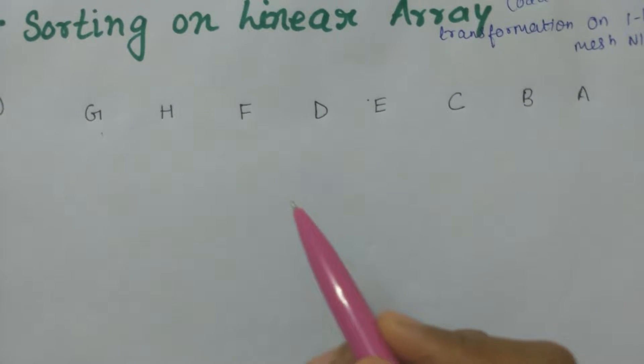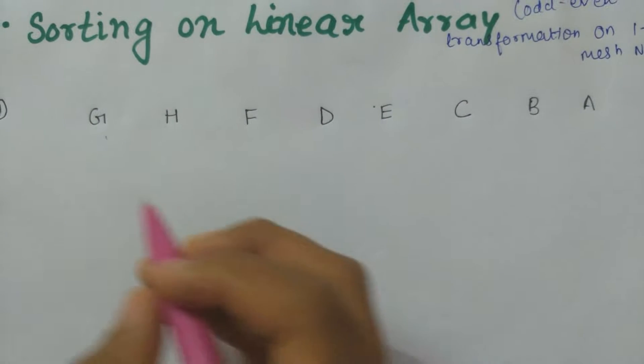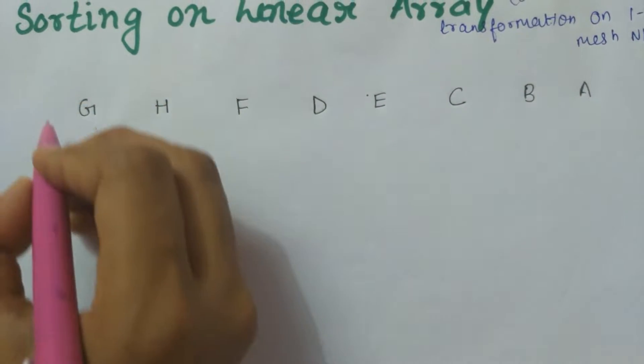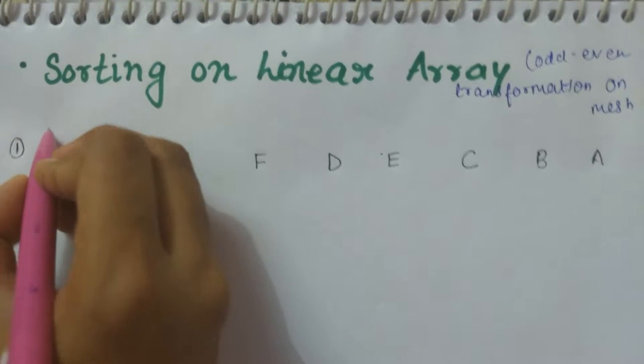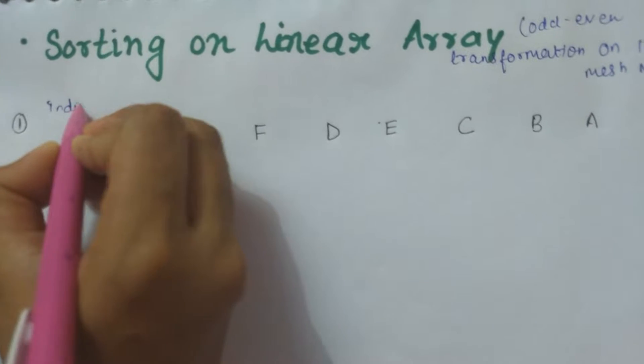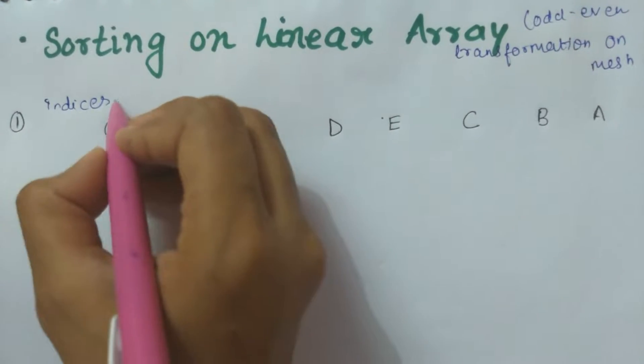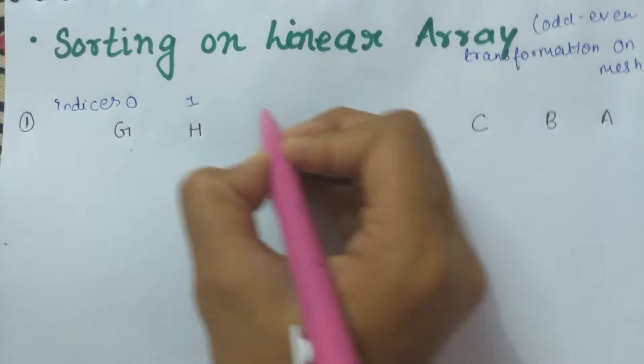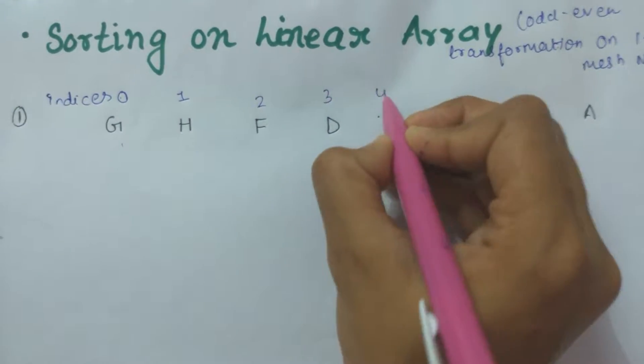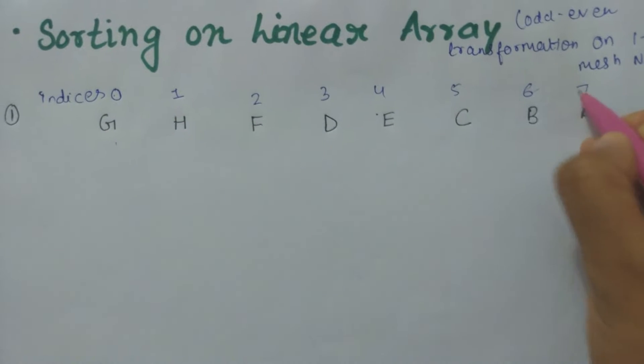So let's start. First, we will give indices to these alphabets. We will write here indices and start from zero, one, two, three, four, five, six, and seven.